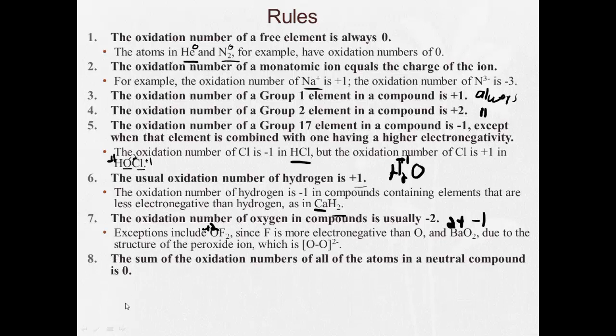Now the sum of all oxidation numbers of all the atoms in a neutral compound is zero. The sum of all the oxidation numbers in a polyatomic ion is equal to the charge on the ion. And we're going to see some of those in the examples on the next slide. So go ahead and pause now and copy all of these down.